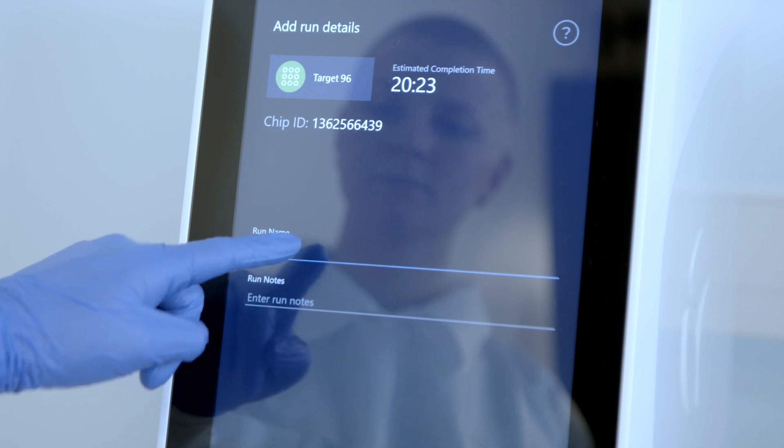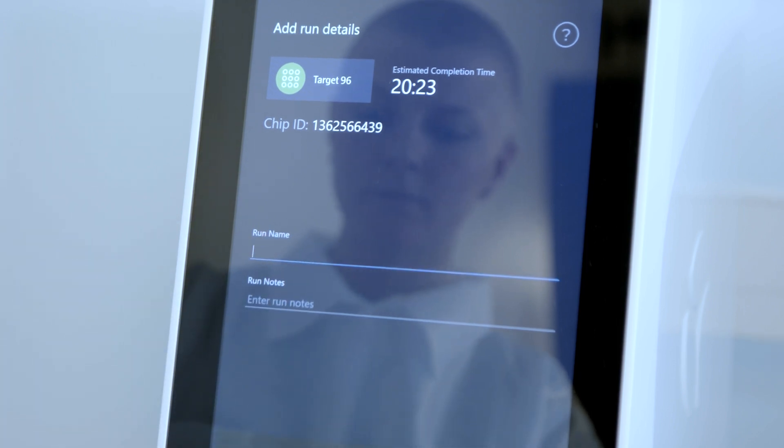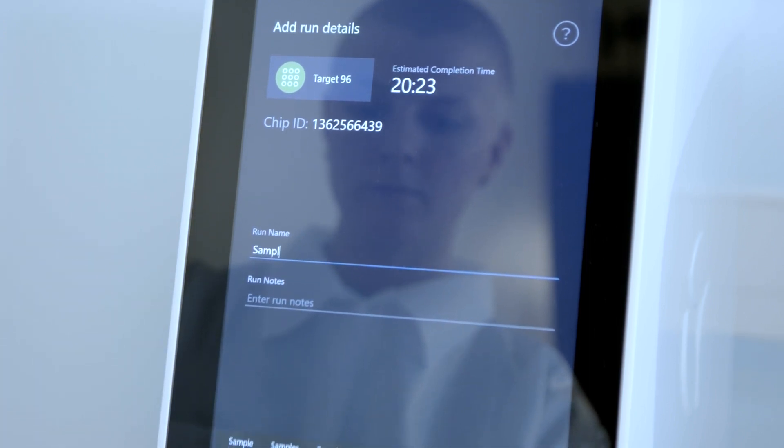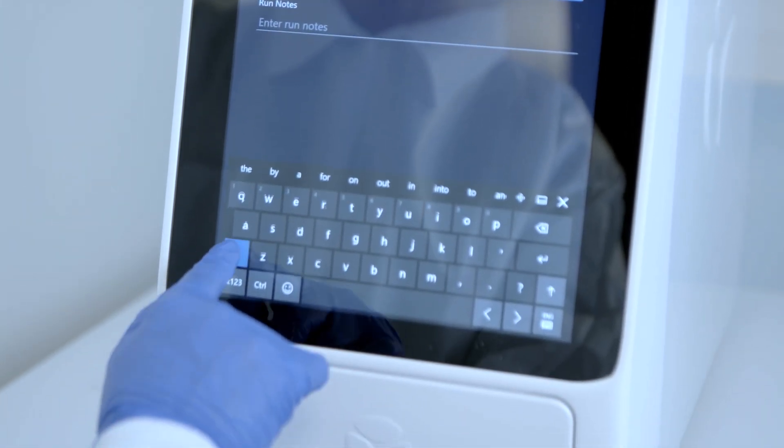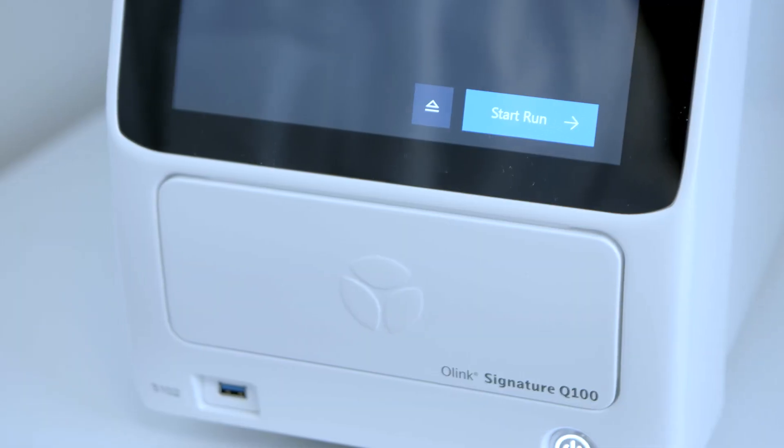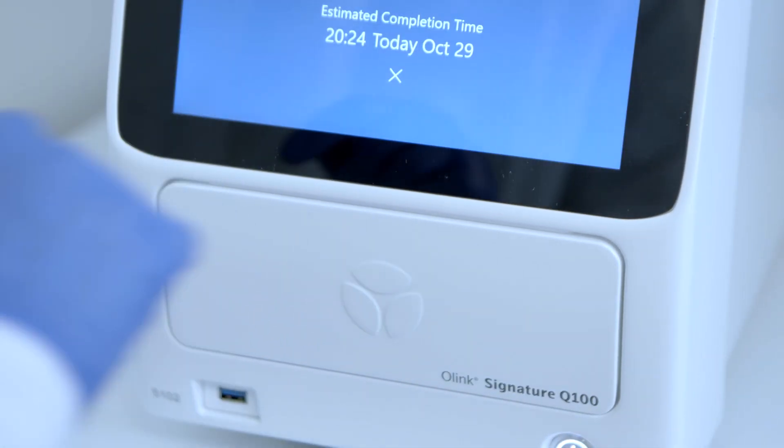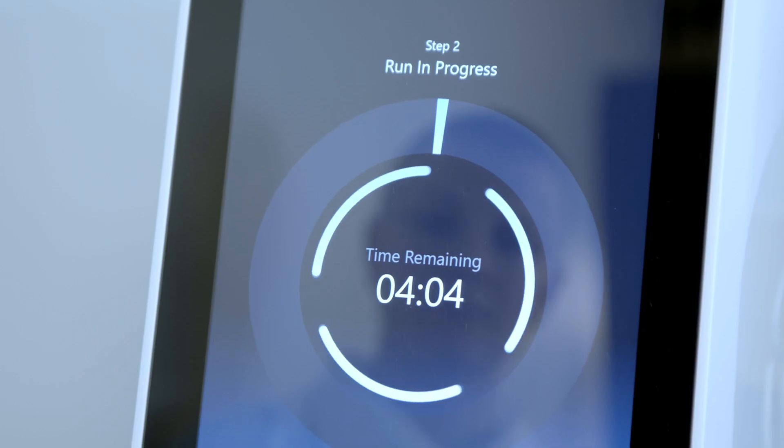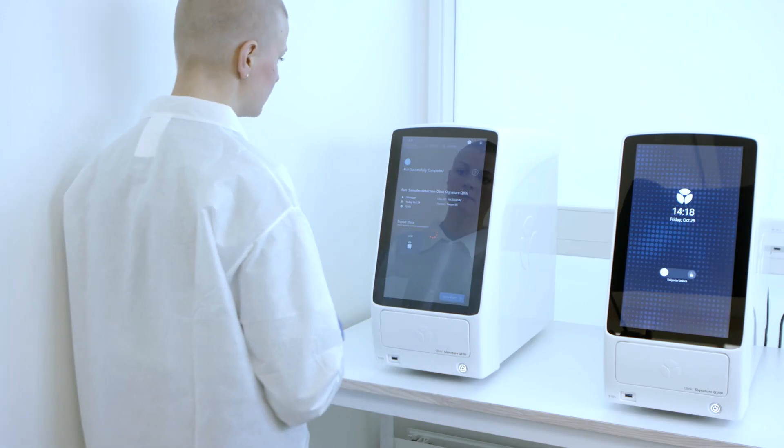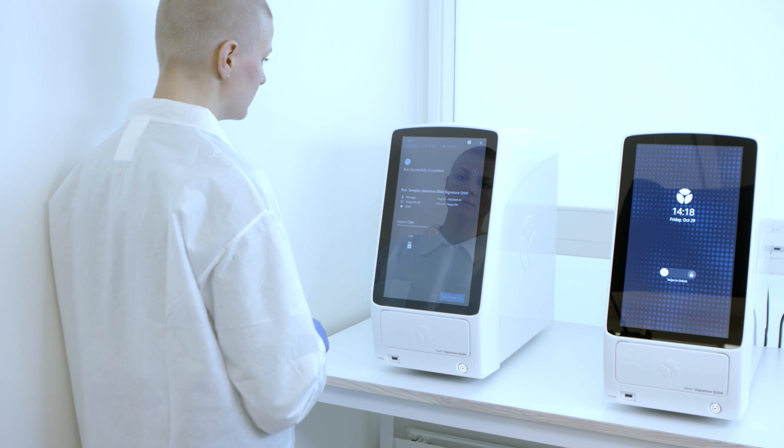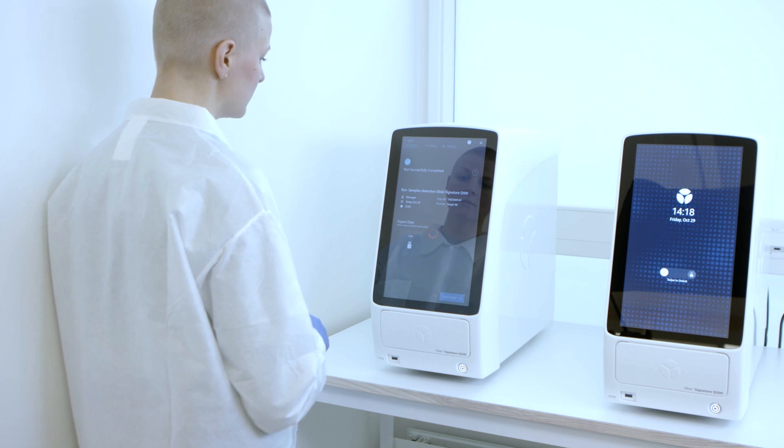On the Add Run Details screen, confirm the chip ID. Then enter a custom run name or run notes if desired, and select the panel type. Tap Start Run. The run begins, and the screen displays the time remaining. Tap Finish when the run is completed. Now you can analyze the exported data using the NPX Signature software.